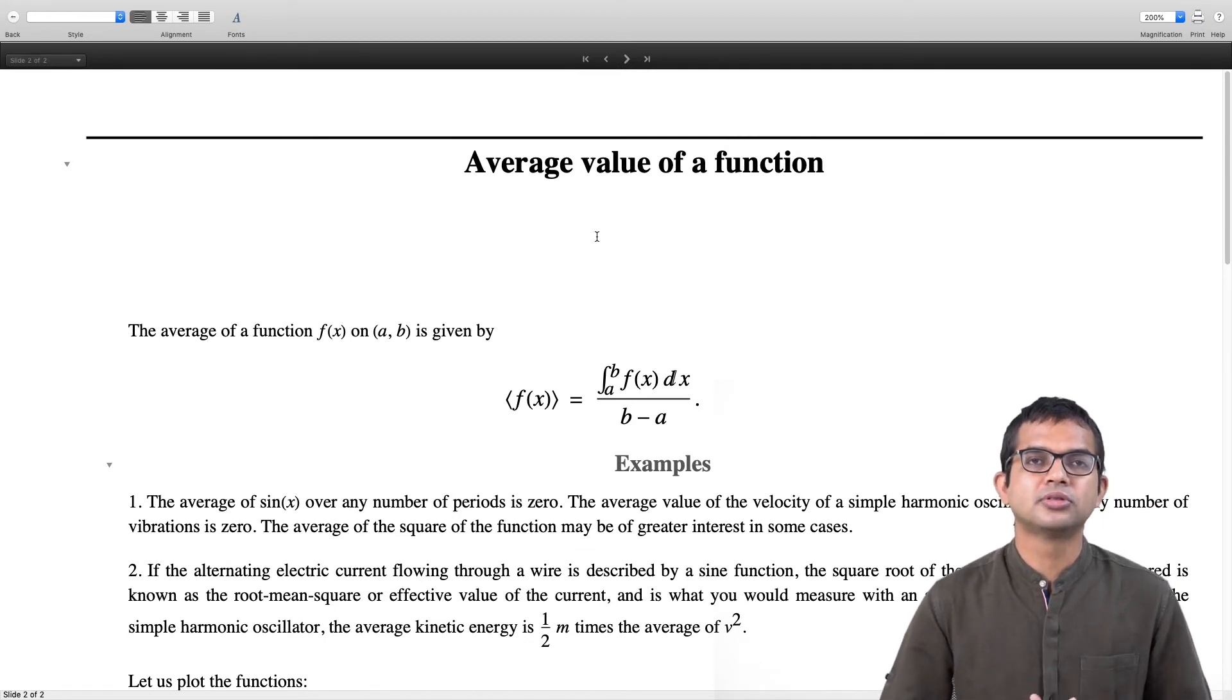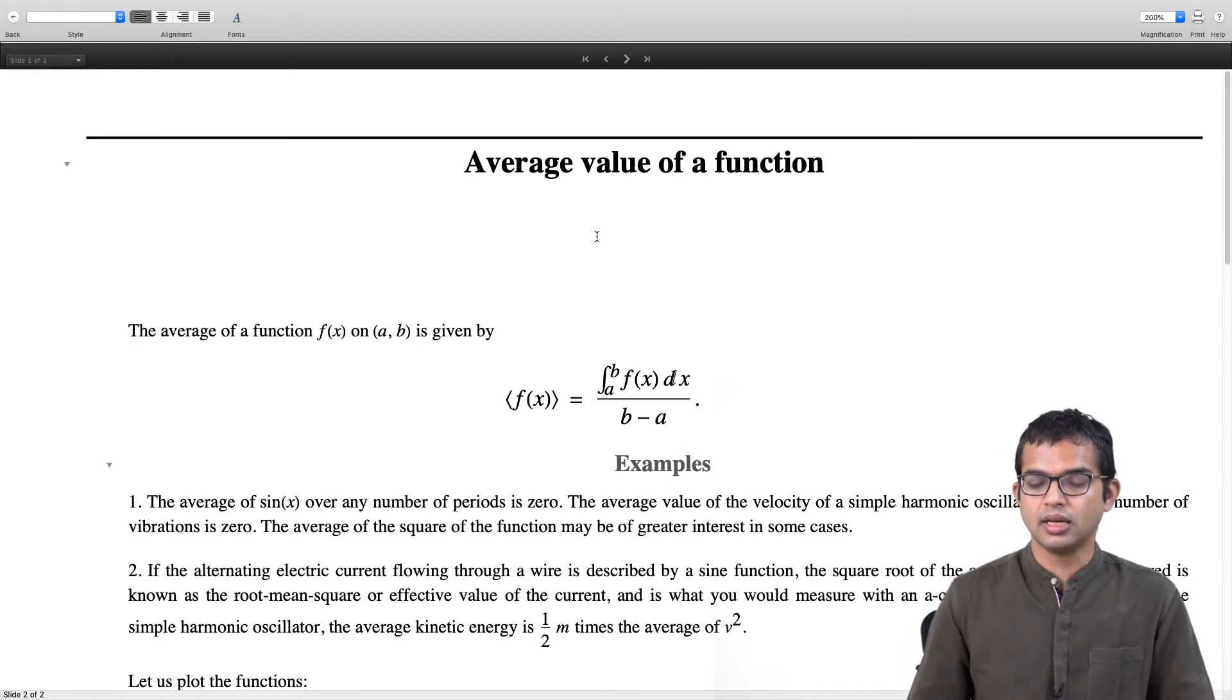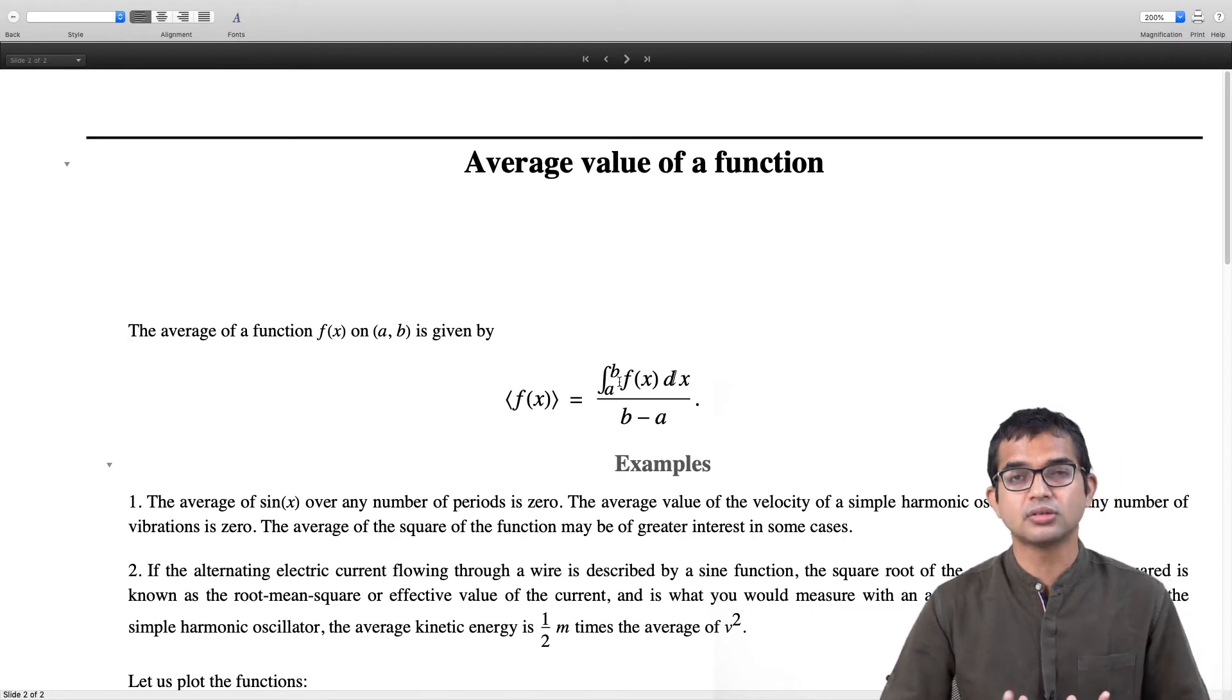The average of a function is something we can understand intuitively based on how we look at average for a bunch of numbers—we would just add them up and divide by the number of these numbers. Likewise, if you are given a function on some interval, you just integrate, which is like a sum itself, and then divide by the length of the interval. This is the notion of the average of a function f(x) on an interval.